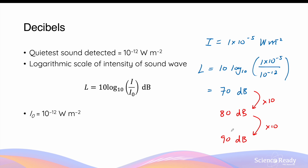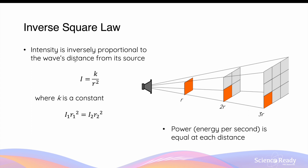As a sound wave propagates from its source, its intensity decreases with distance. Specifically, intensity is inversely proportional to the square of the wave's distance from the source — this relationship is known as the inverse square law. We can express this as intensity equals a constant k divided by r squared, where r is the distance from the source. For a given sound source, k is constant regardless of where you measure.